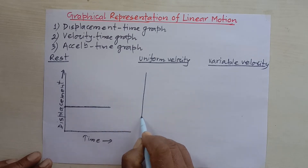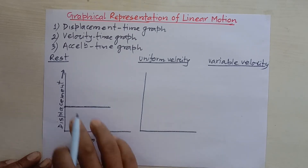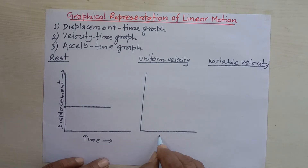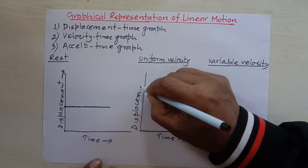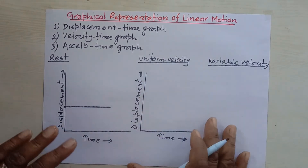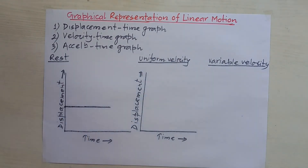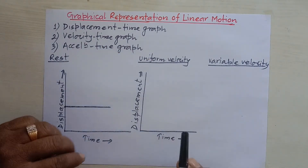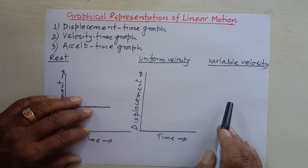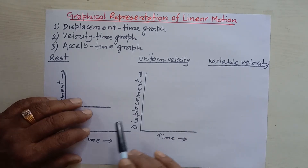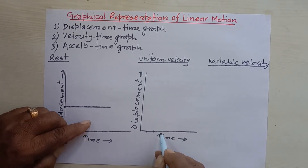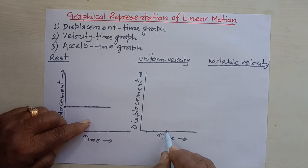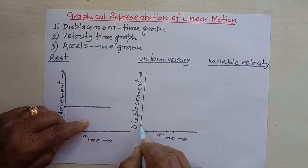Now let's talk about uniform velocity. If a body is moving with uniform velocity, time is taken on the x-axis and displacement on the y-axis. Uniform velocity means a body covers equal distances in equal intervals of time — for example, five meters in the first second, five meters in the second second, five meters in the third second, and so on.